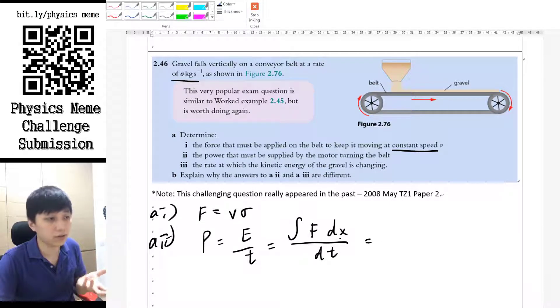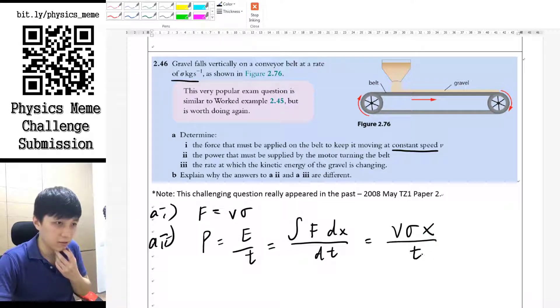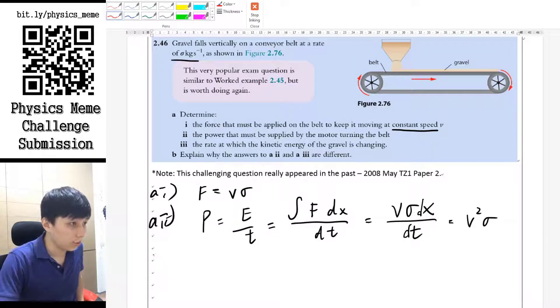So what we will have is, since F is in fact a constant, so we will have v sigma, all these are constant, right? So it doesn't really matter a lot, x over t. So then this is simply the answer we could have, x over t, or more precisely dx over dt as v velocity. So at the end you will have v squared sigma.